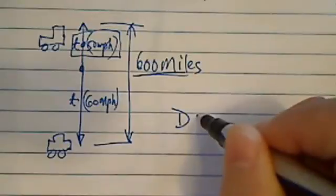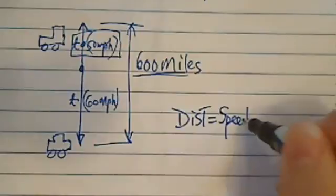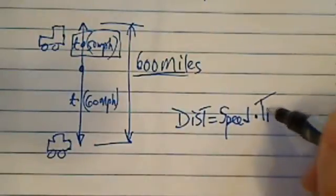It's that distance is equal to speed times the amount of traveling time.